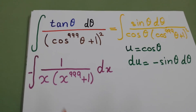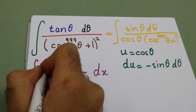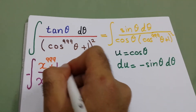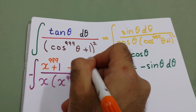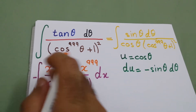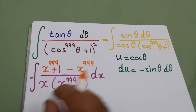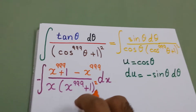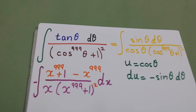What we will do to solve this integral is add x to the power 999 and subtract x to the power 999. Now we will divide the first two terms by the denominator, which has a square here.